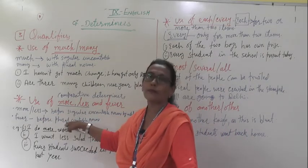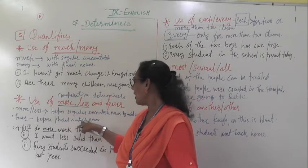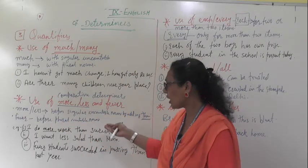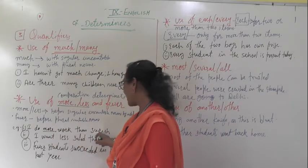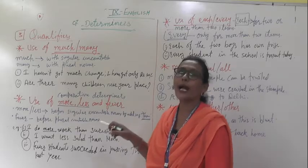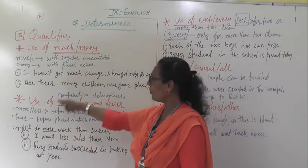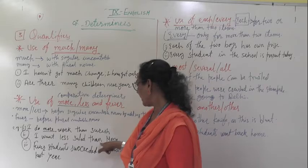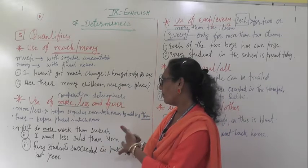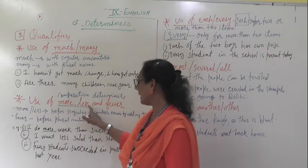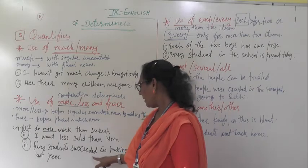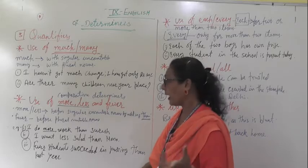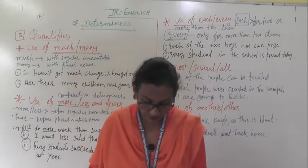Fewer is used before plural countable nouns. Examples: 'I do more work than Suresh' — work is an uncountable noun. 'I want less salad than Mona.' 'Fewer students succeeded in passing than last year.' So fewer is used for plural countable nouns in comparisons.